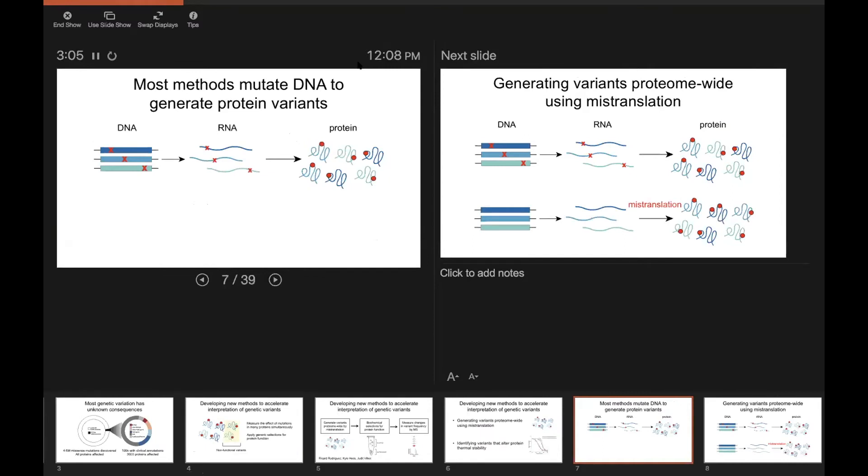So almost all the existing methods that you probably are familiar with generate protein variants by mutating the DNA. And this makes a lot of sense. It's relatively easy to do.